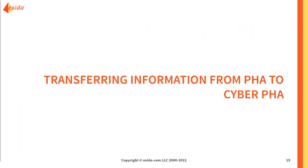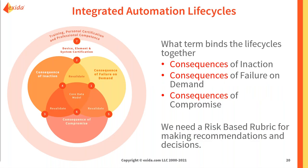This ties into how we transfer information from the PHA to the cyber PHA. In recent years, we've seen increasing importance of what we call the integrated automation lifecycle — the understanding that what we do on the safety side, the alarm side, and the cyber side are all integral to each other. Facilities looking to manage their risk really need to address all of these areas. Consequence and risk is the central thread: for alarms, it's the consequence of inaction; for functional safety, the consequence of failure on demand; for cyber, the consequence of compromise.